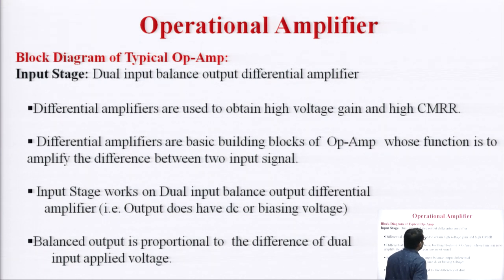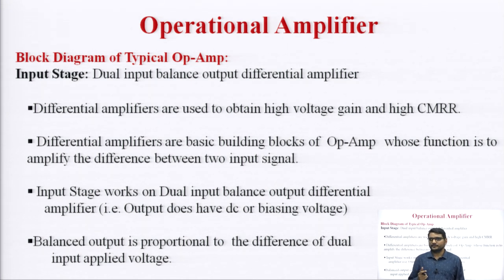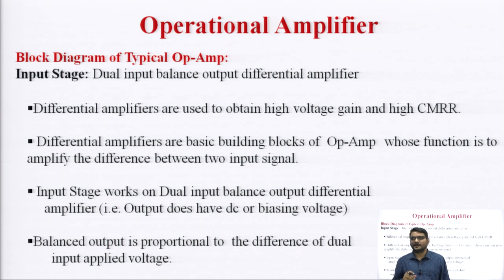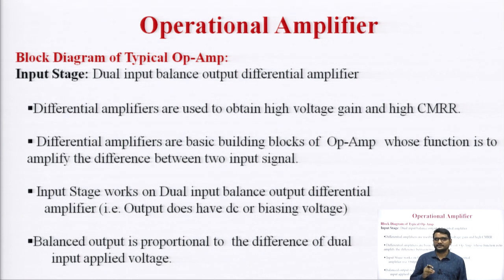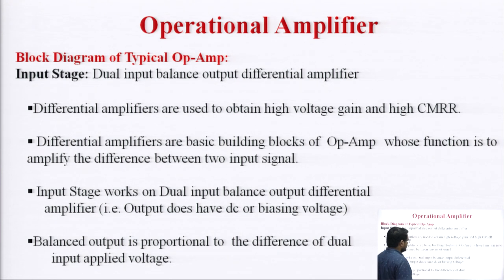The first stage — the dual input balanced output differential amplifier — is the basic building block of the operational amplifier. The differential amplifier is used to obtain high gain and high CMRR (common mode rejection ratio). The term 'balanced output' means the output does not have a DC or biasing voltage — only the difference of the two applied input voltages.